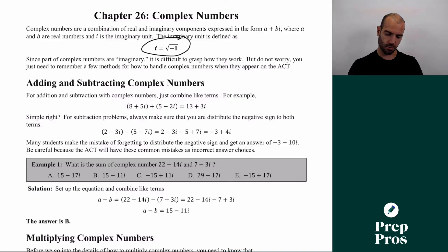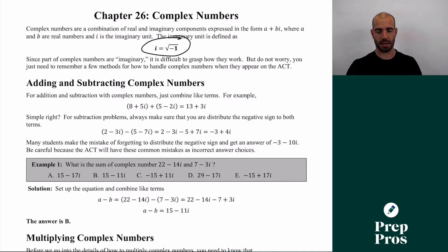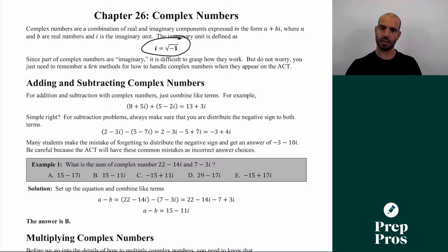All you need to know about the i is that i is the same as the square root of negative one. Sometimes in math you're doing an equation and you get to something like x squared equals some negative number, and that's where the i's come in. You don't really need to understand them too deeply for most of the i questions on the ACT.